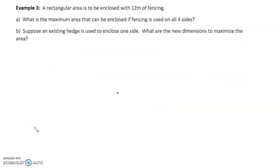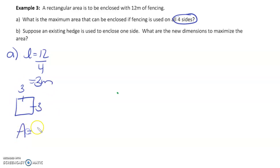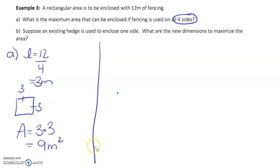Example three: a rectangular area is to be enclosed with 12 meters of fencing. Part a — fencing is on all four sides. The side length is 12 ÷ 4 = 3 meters, giving a 3 by 3 square. The area is 3 × 3 = 9 meters squared.